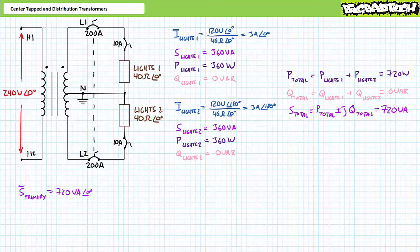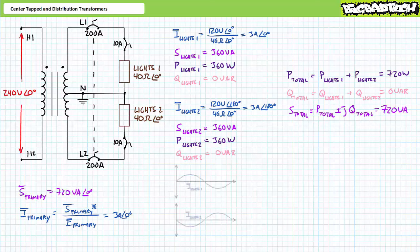If we were to assume this transformer is 100 percent efficient, we can say that the primary must also provide 720 volt amperes of apparent power, all of which is directed towards real power. An algebraic manipulation of the AC power formula solving for current demonstrates the 240 volt primary draws 3 amps at an angle of 0 degrees. With the system in the presently balanced condition, you will note that the current drawn by each load is equal in magnitude yet perfectly out of phase with one another.